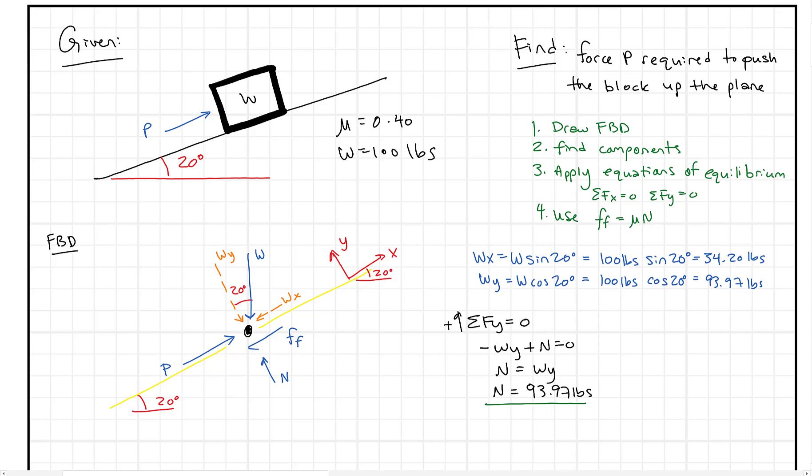The next step is to find the sum of the forces in the x direction. When we say the sum of the forces in the x direction, we have plus P minus wx minus the friction force, which is opposing movement, so the force of friction has to equal zero. Here we still have two unknowns: we still have P, which is unknown, and we have this force of friction.